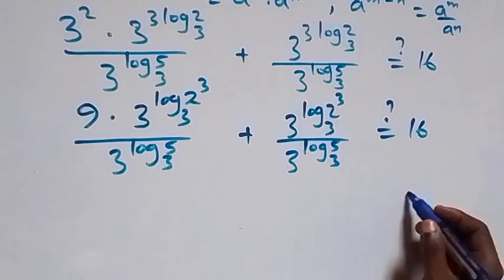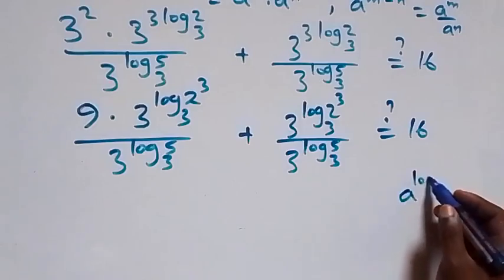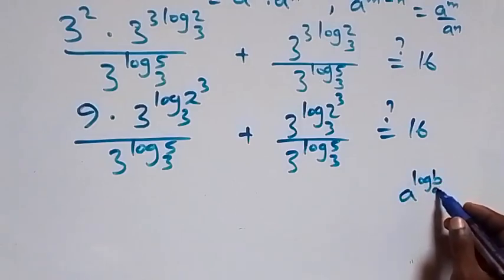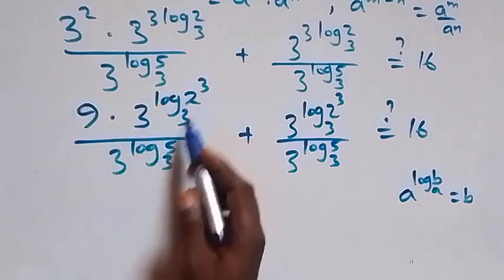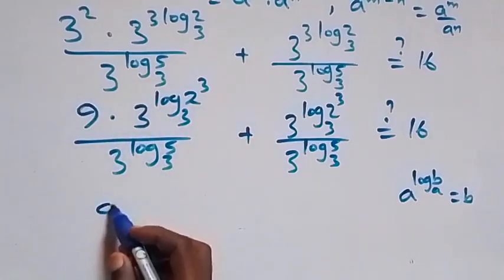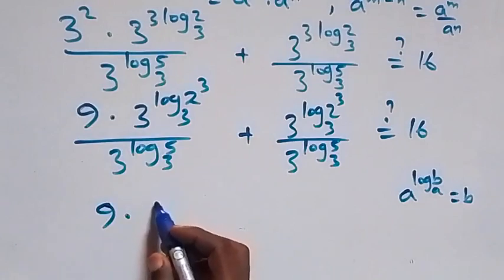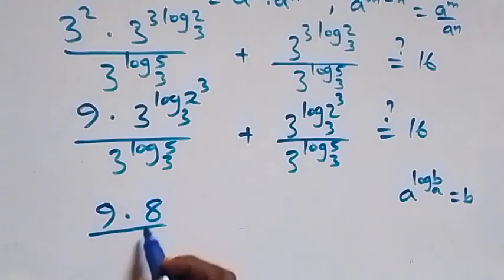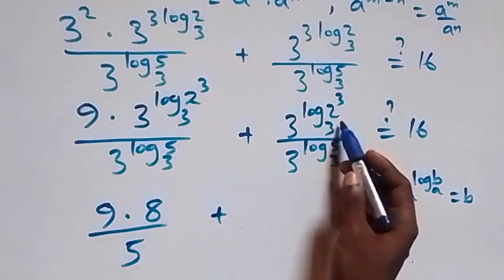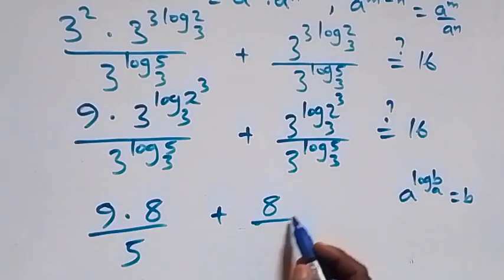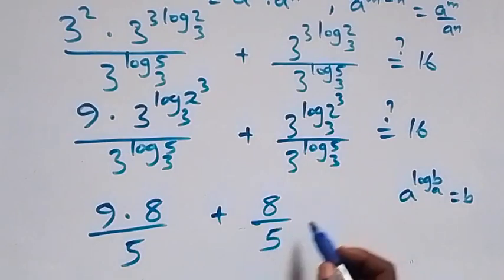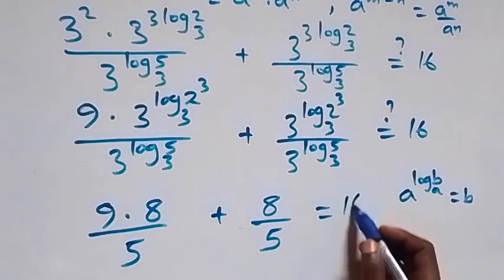Taking 3 up from the power log and reversing it, this becomes 3 squared which is 9, times 3 raised to power log 2 raised to power 3 base 3, over 3 raised to power log 5 base 3, plus 3 raised to power log 2 raised to power 3 base 3 over 3 raised to power log 5 base 3, equals 16. Applying the identity a raised to power log base a of b equals b, we get 2 raised to power 3, which is 8. So we have 9 times 8 over 5 plus 8 over 5, which equals 16.